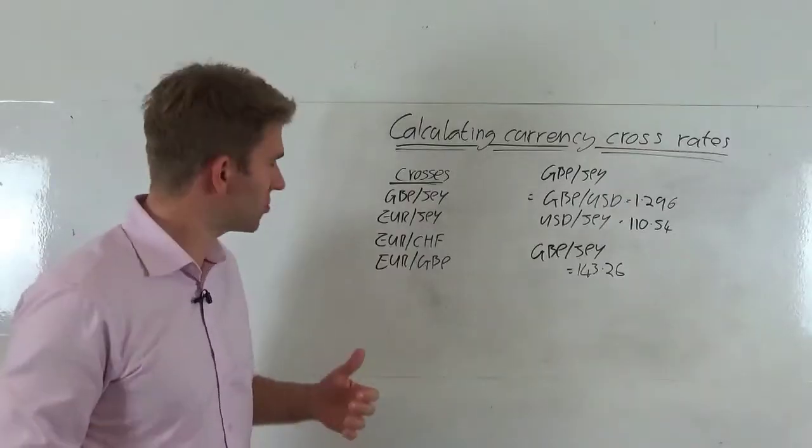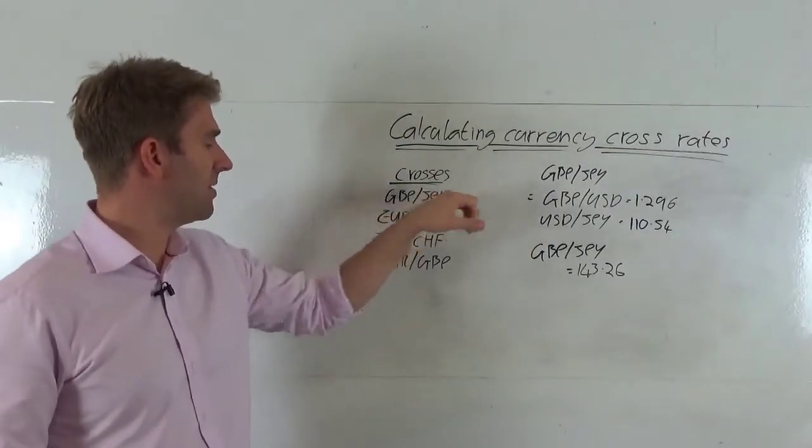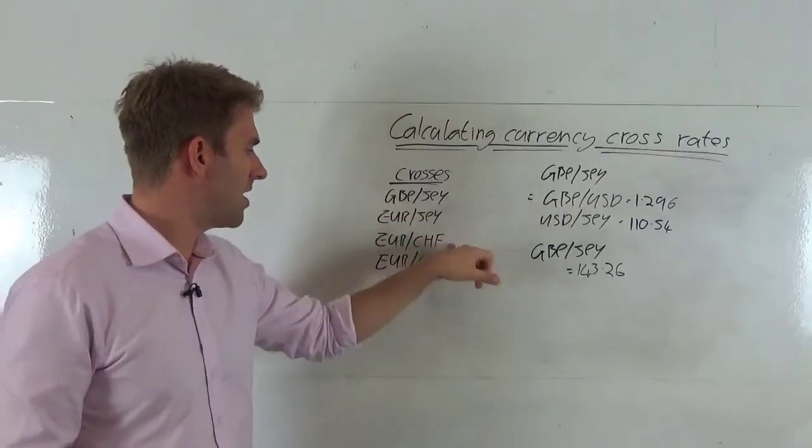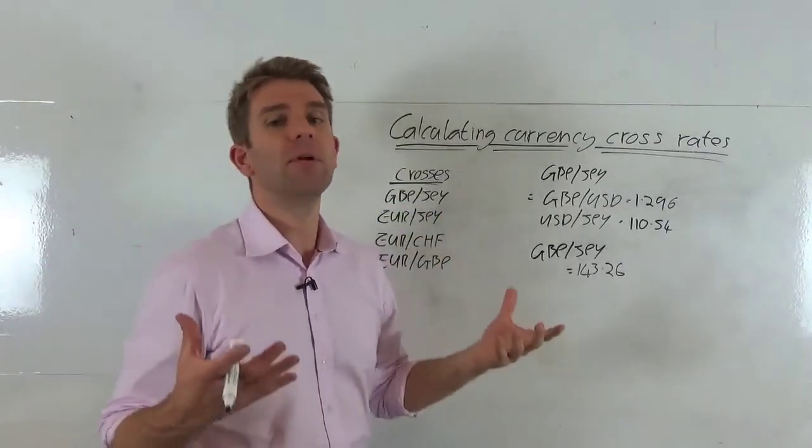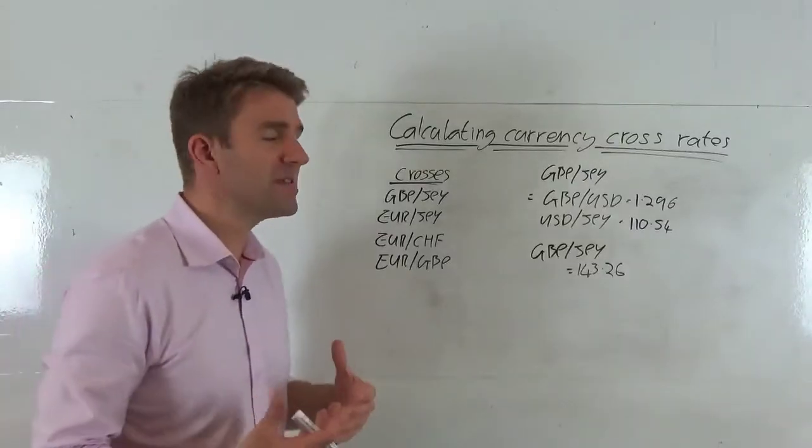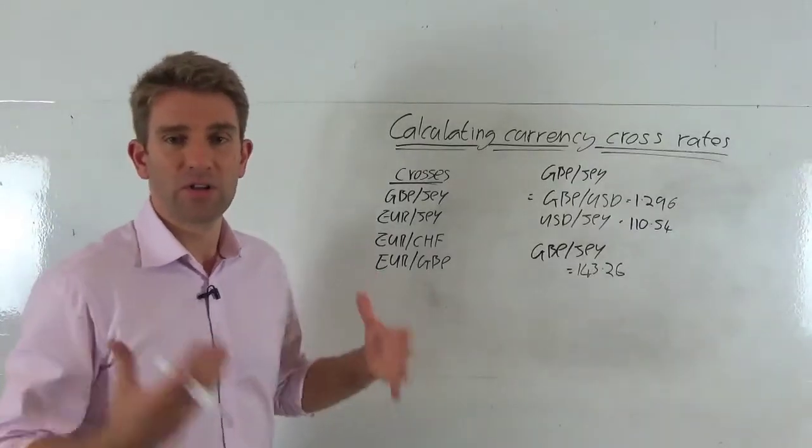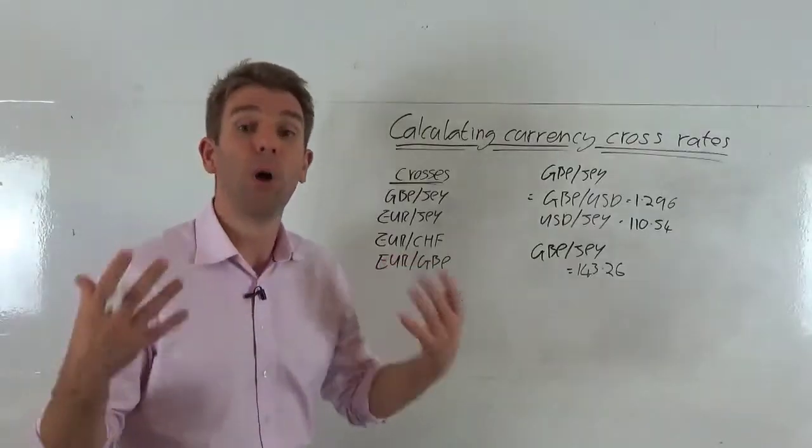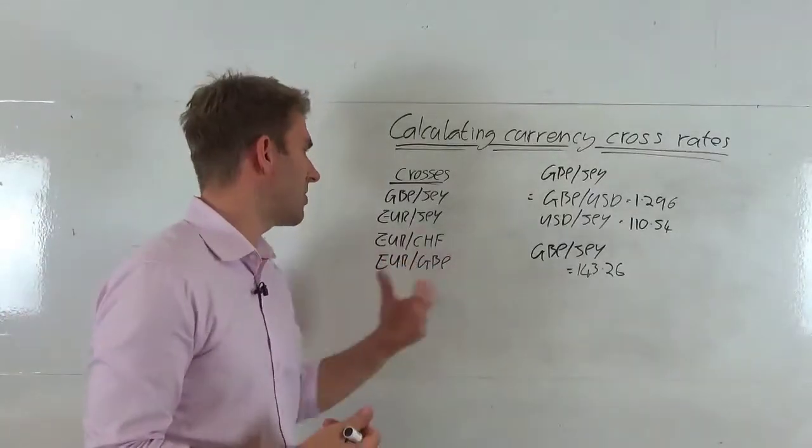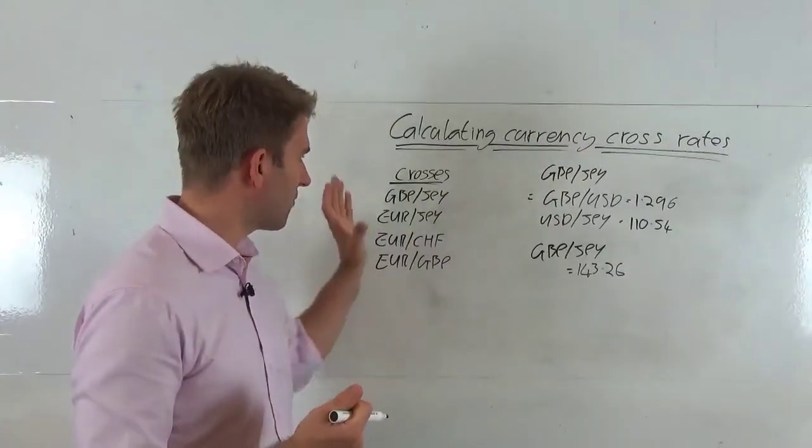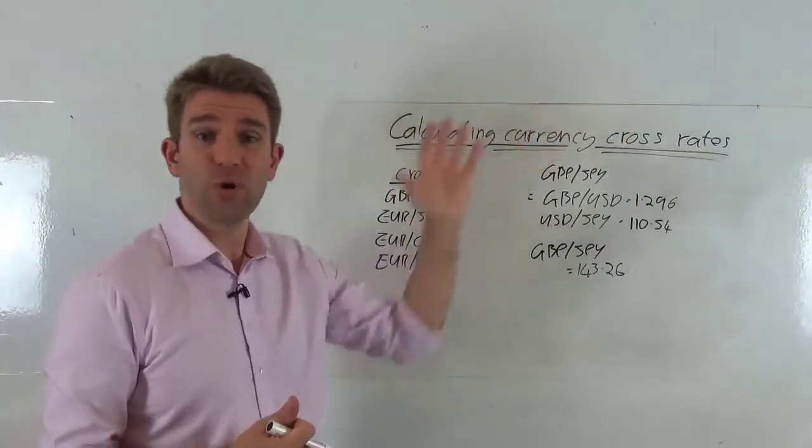And if you look at some examples of crosses here, we've got GBP/JPY, EUR/JPY, EUR/CHF, EUR/GBP. You can see that the common denominator or the common theme throughout these is that there's no US dollar constituent. There's no US dollar component, so this is going straight from the currency you have to the currency you want.